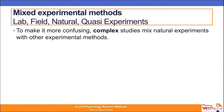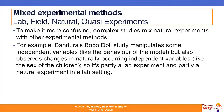To make it more complex, there are some studies which mix natural experiments with other experimental methods such as lab and field. For example, in Bandura's Bobo doll study, he manipulates some independent variables — such as the behaviour of the model, whether they were hitting the Bobo doll or playing gently — but also observes changes in naturally occurring independent variables like the sex of the children. So it's partly a lab experiment because it took place in a very controlled, contrived setting, and partly a natural experiment because gender differences are not something the researcher can manipulate — the genders were naturally occurring.